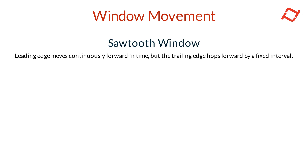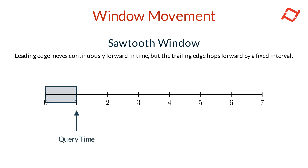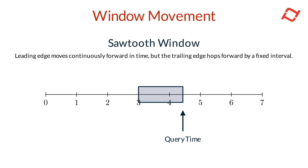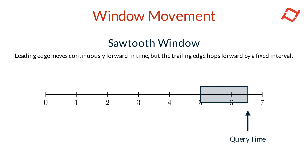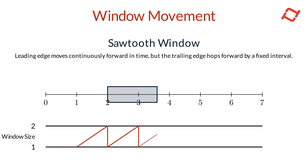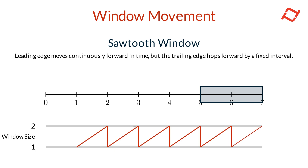A sawtooth window combines the properties of both sliding and hopping windows. The leading edge moves continuously like a sliding window, providing fresh data at query time. However, the trailing edge moves in fixed intervals like a hopping window, meaning the window's width is not constant. This results in a window that grows incrementally and then resets when the trailing edge hops forward, creating a sawtooth pattern where the window expands and contracts slightly as time progresses. Sawtooth windows offer the computational efficiency of hopping windows while maintaining near-real-time freshness. The trade-off is a small degree of fuzziness in the window's width, which is often acceptable in AI applications.